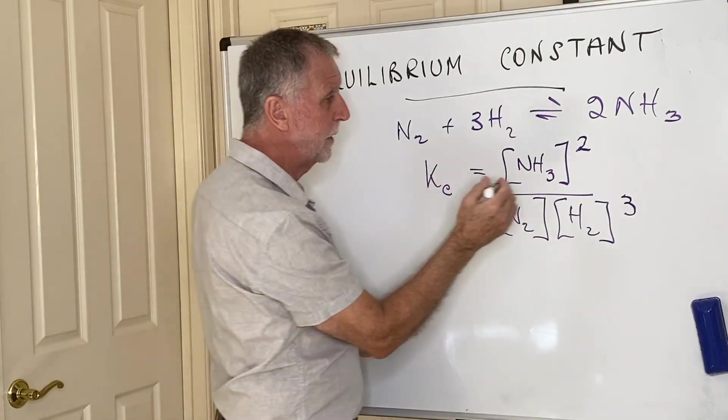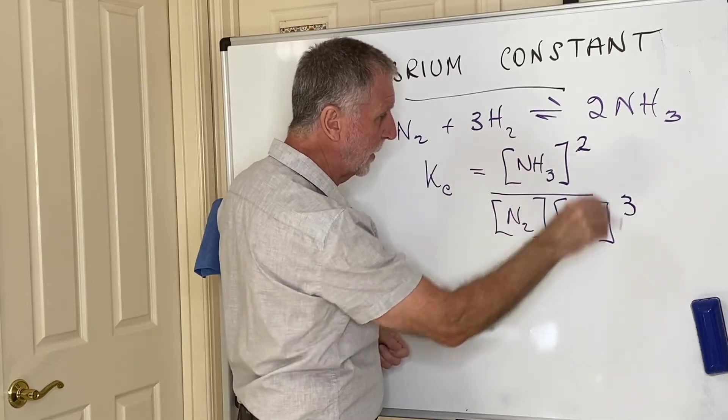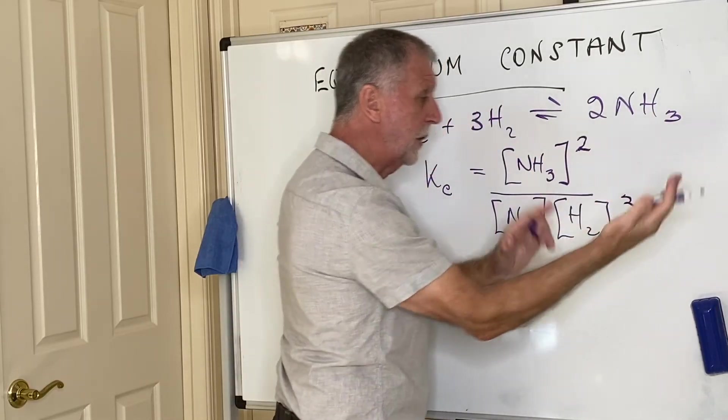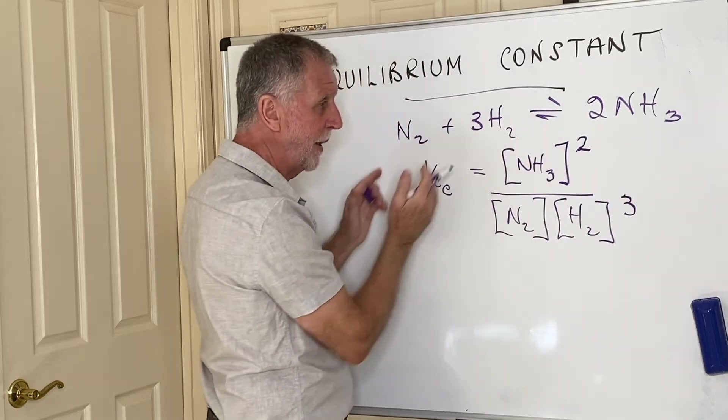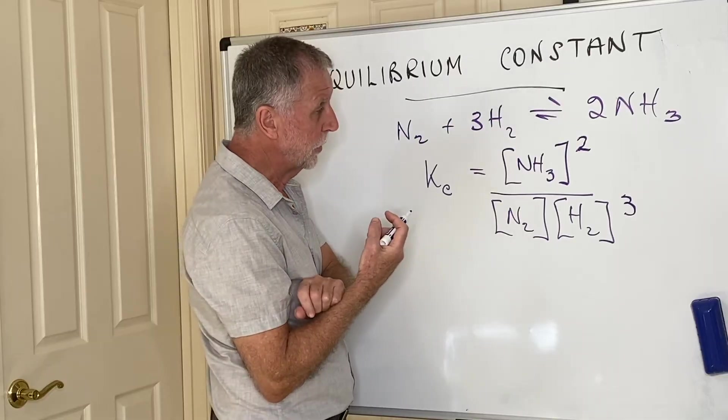However, if you find that the ratio of these, when you calculate that, is greater, then it means it's further to the right than it should be. And it would need to shift left in order to get to the K value that it should be.